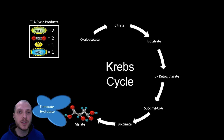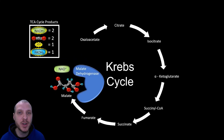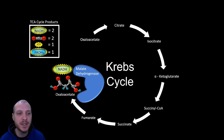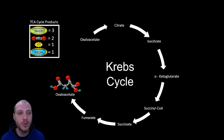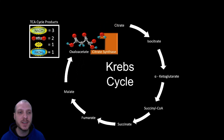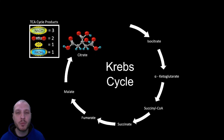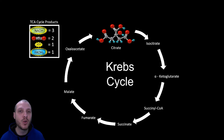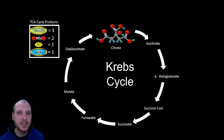Continuing with a normally functioning Krebs cycle, malate meets with the enzyme malate dehydrogenase, producing another NADH molecule. After this reaction, we're back at oxaloacetate — the cycle has completed itself. Oxaloacetate then meets citrate synthase and another acetyl-CoA molecule, and the cycle is complete, returning to citrate and continuing to generate all the products that feed into the electron transport chain. The final products of one round of the Krebs cycle: three NADH molecules, two CO2 molecules expelled, one ATP, and one FADH2.